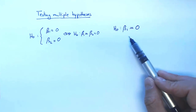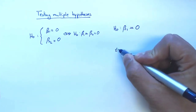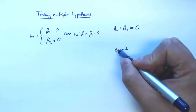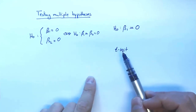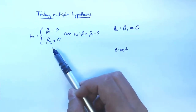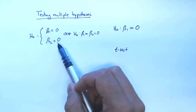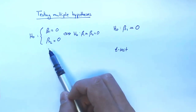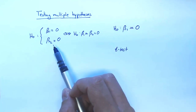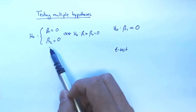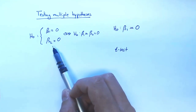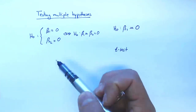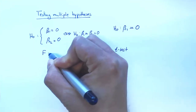To test a single coefficient null hypothesis we used a t-test. You might be tempted to use a t-test twice — test beta 1 against 0 and beta 2 against 0 — and reject the joint hypothesis if either test rejects. But that's not a good idea because it will be very hard to control type 1 error with this sequential procedure. So instead you want to use a different kind of test called an F-test.